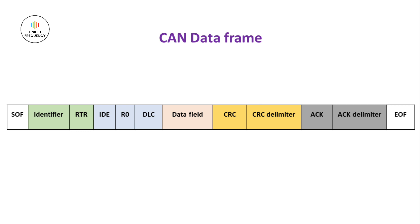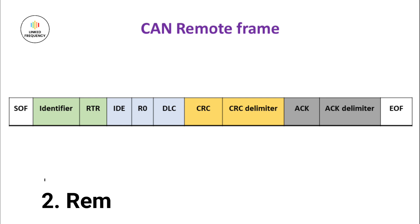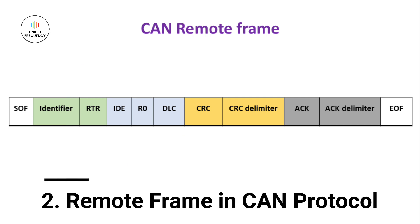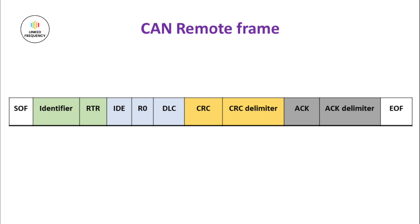Moving ahead, now let's look into the second type, i.e. RemoteFrame. A node that requires data from another node on the CAN network requests a transmission by sending a remote frame. Instead of carrying actual data, they contain an identifier, i.e. CAN ID, and a request flag, i.e. RTR, which indicates that the transmitting node expects the receiving node to send the corresponding DataFrame in response.